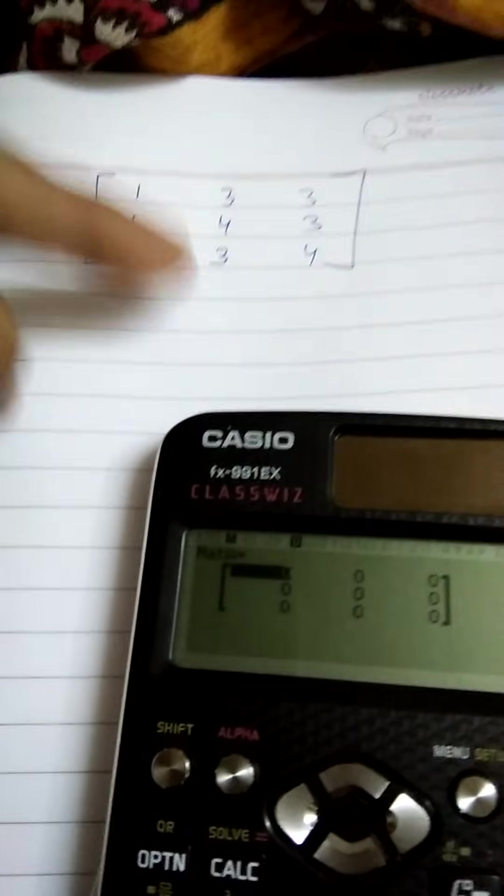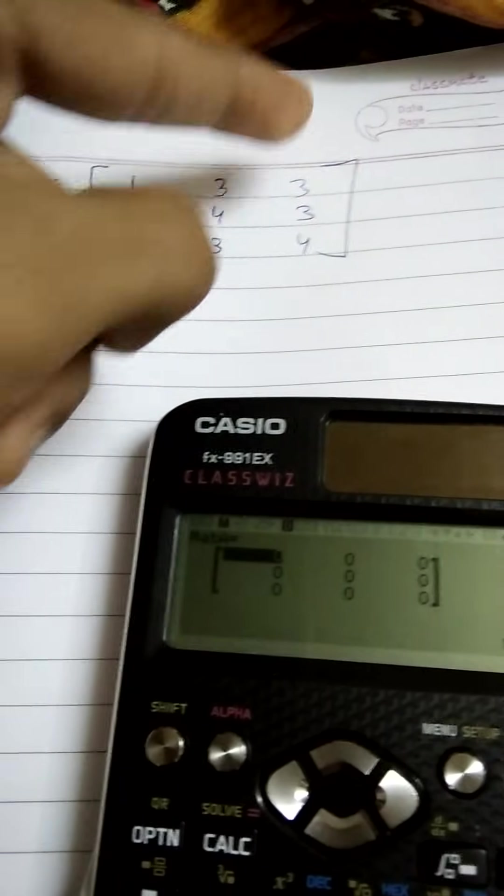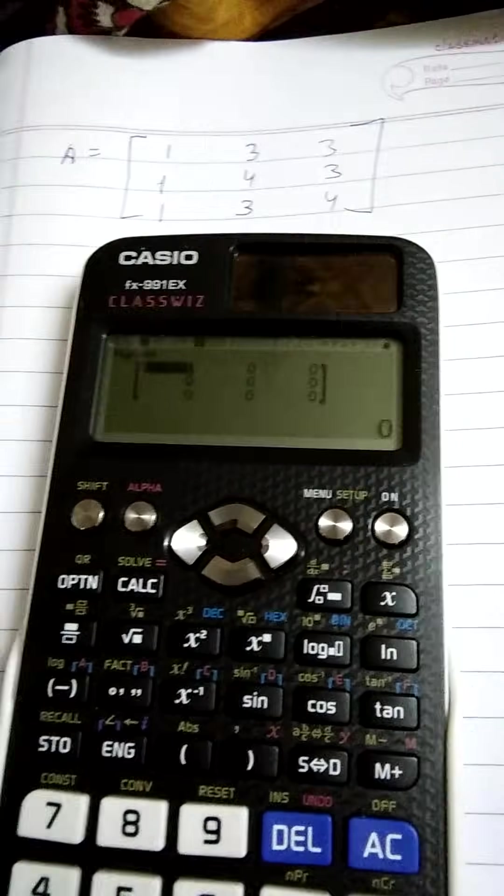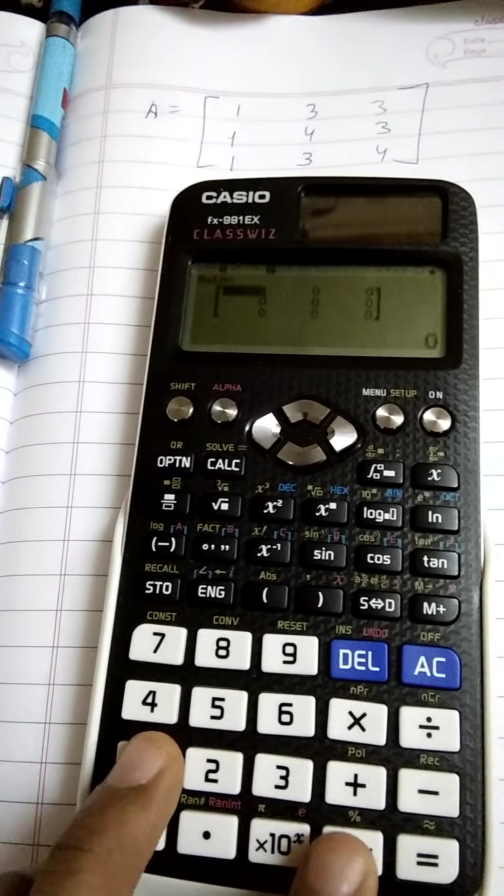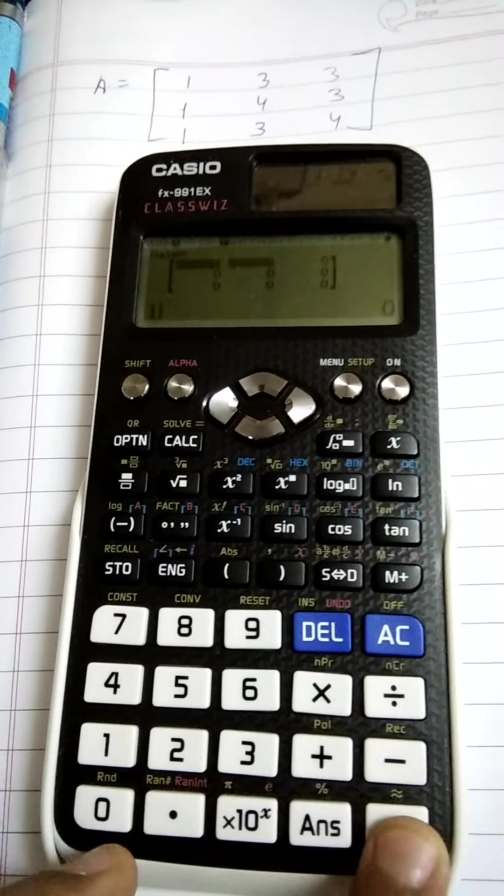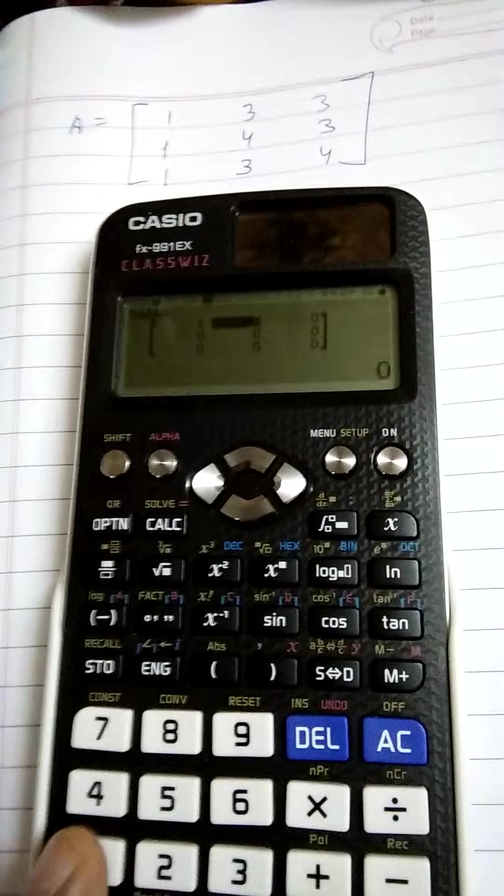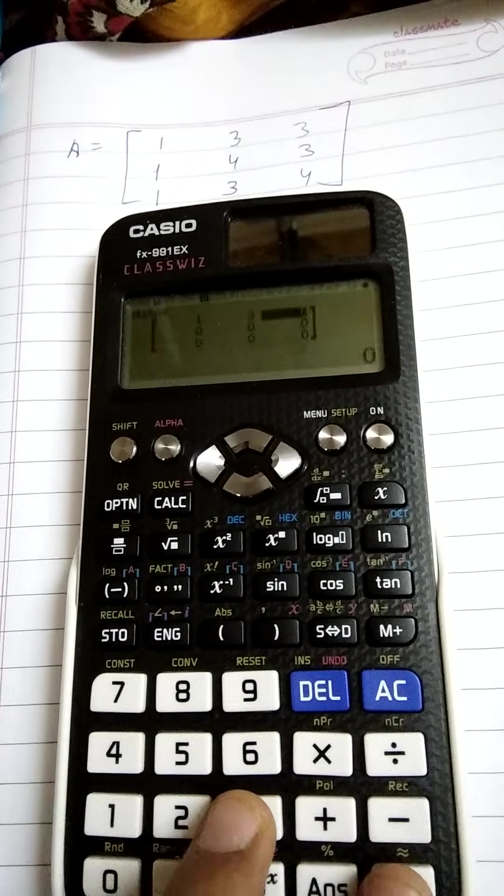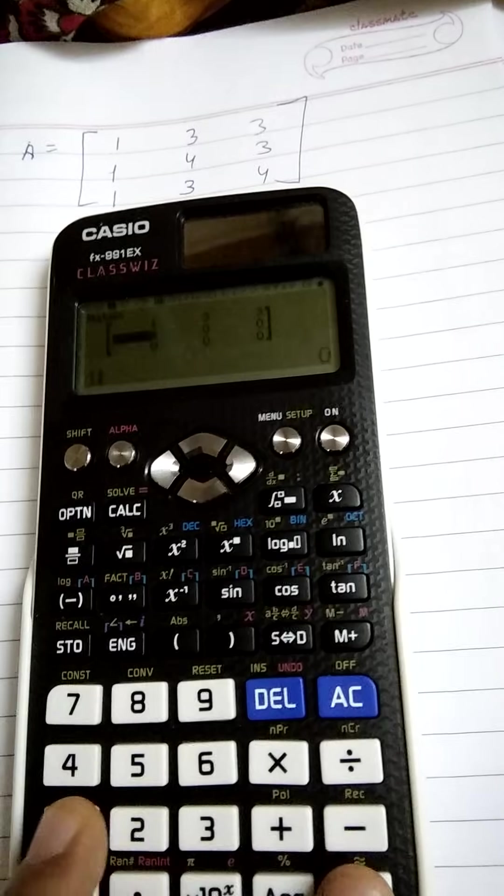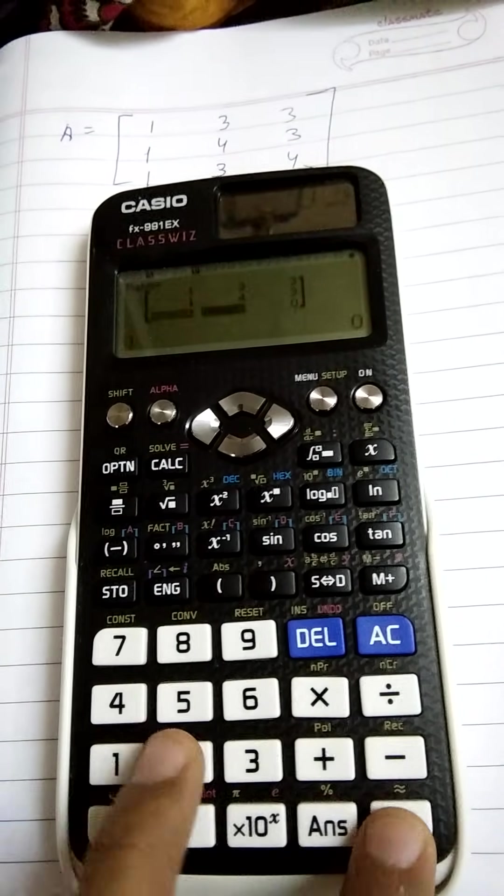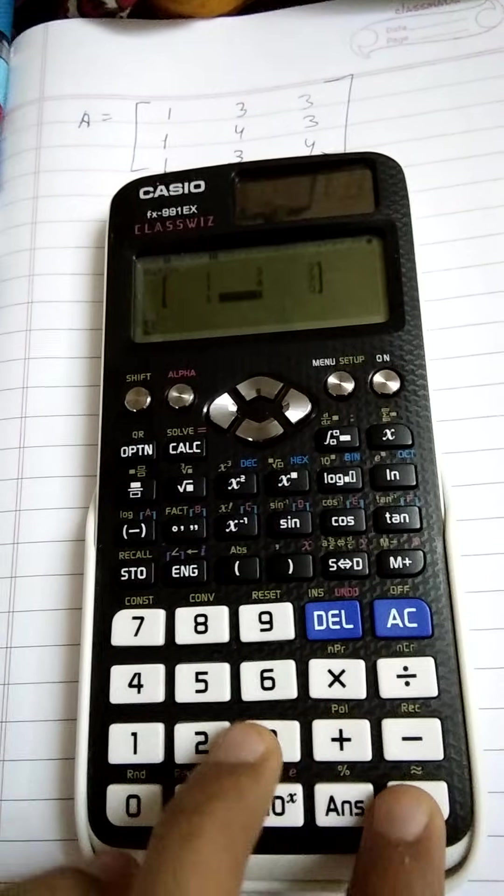These are the rows and these are the columns. Now we are going to enter the matrix which we have. That is 1, after entering 1 we press equals so that the cursor moves to the next one. Next one is 3 equals, 3 equals, 3 equals, 1 equals, 4 equals, 3 equals, 1 equals, 3 equals, 4.